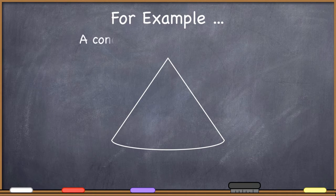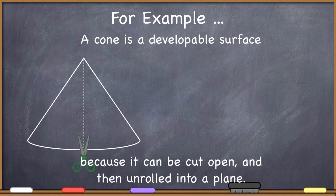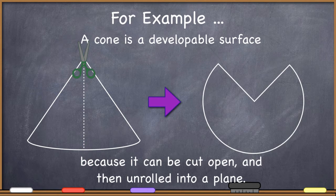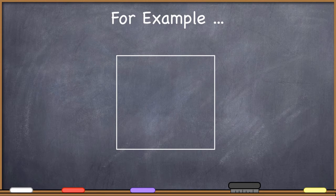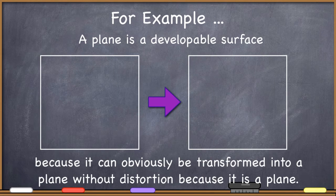A cone is also a developable surface, because similarly I can take some scissors, cut up one side of the cone, and then unroll it into a plane. I get a slightly different shape — this kind of Pac-Man shape — but you can see that if I make that transformation to the cone, I can get to the plane. It is also true that a plane is a developable surface because it can be transformed into a plane without distortion, because that's exactly what it is. So the cylinder, the cone, and the plane are three developable surfaces because they can be directly converted into a two-dimensional plane.